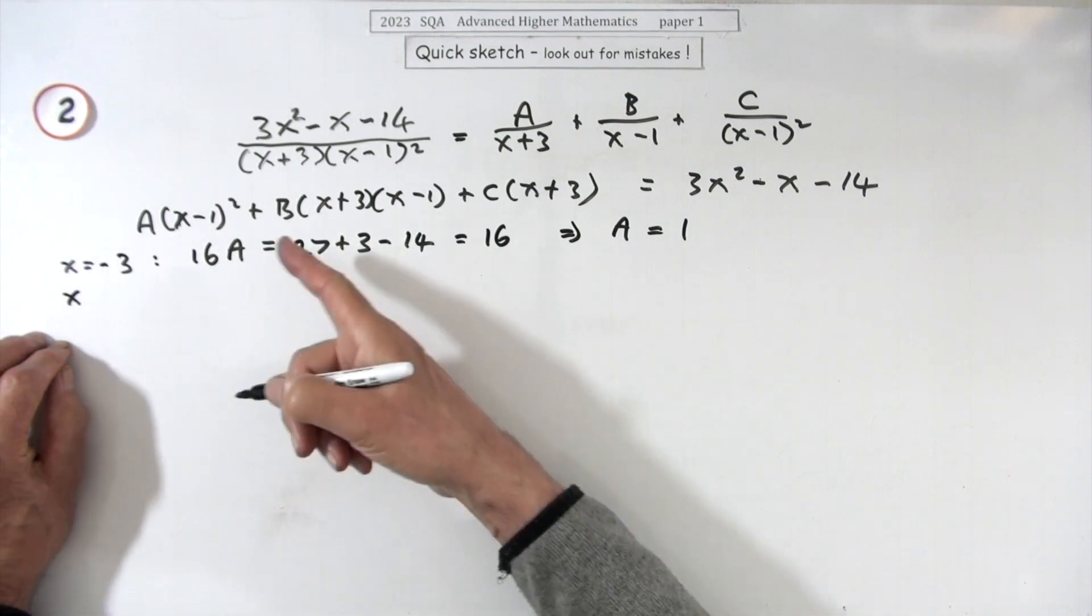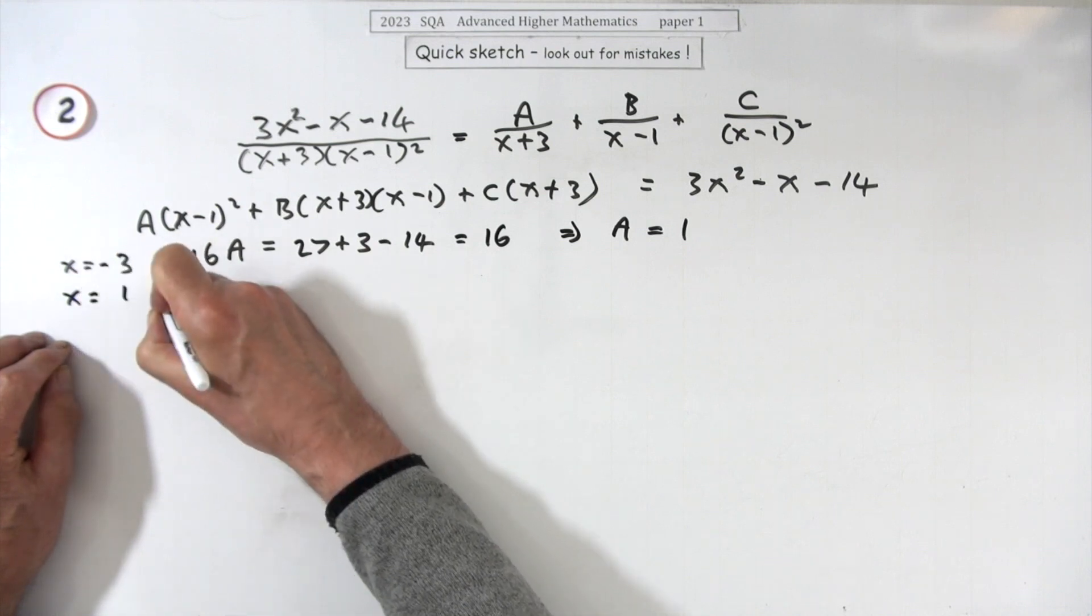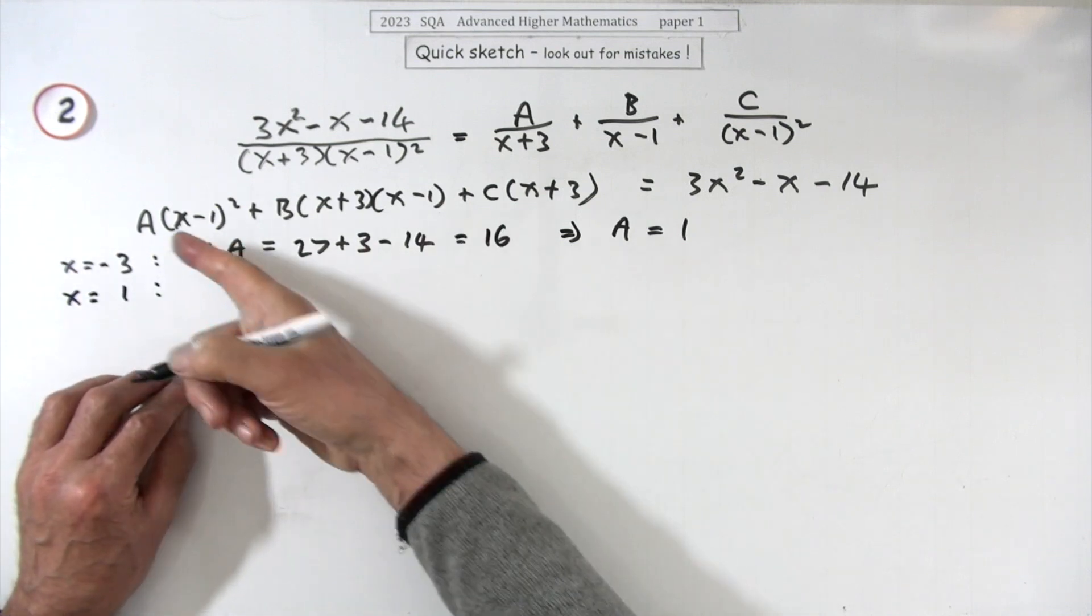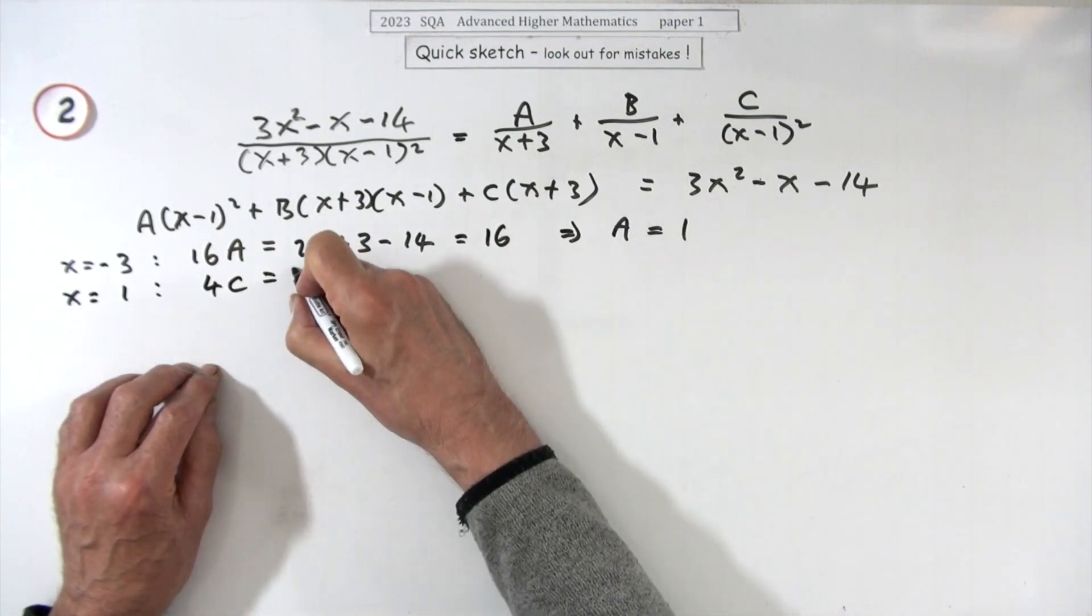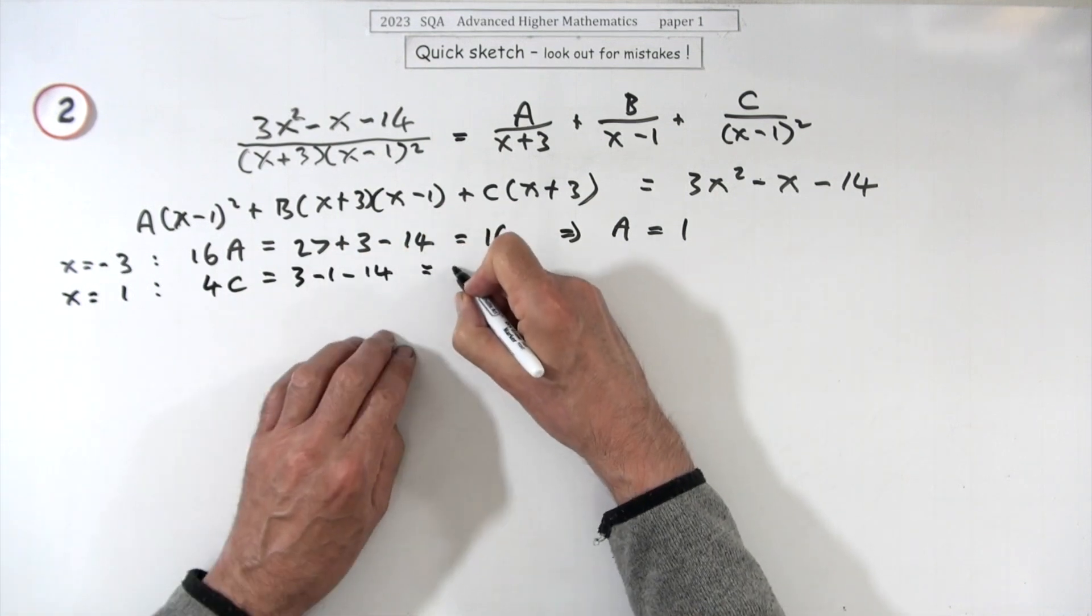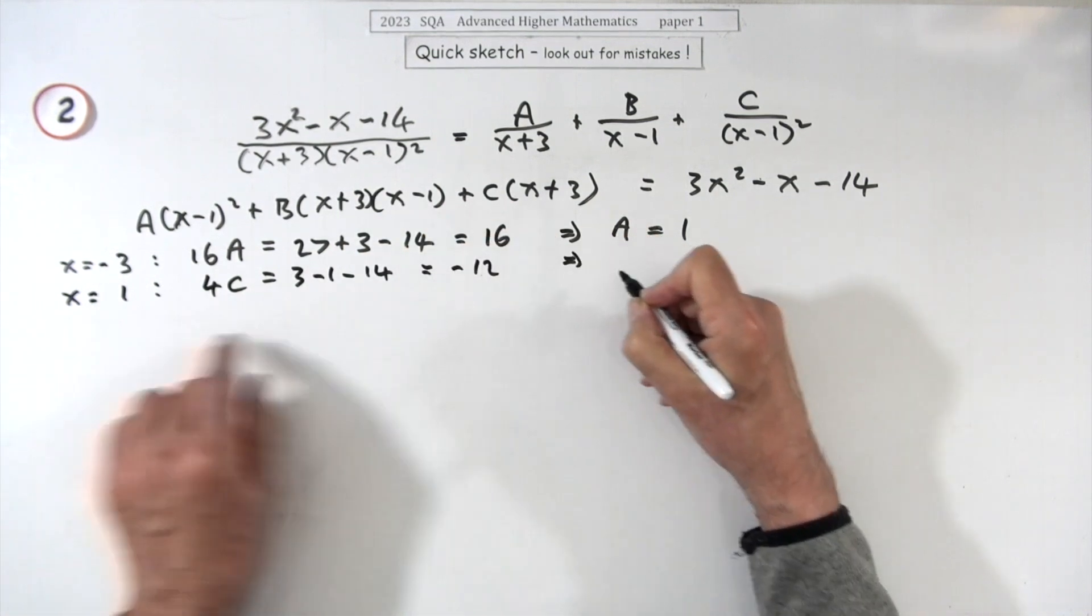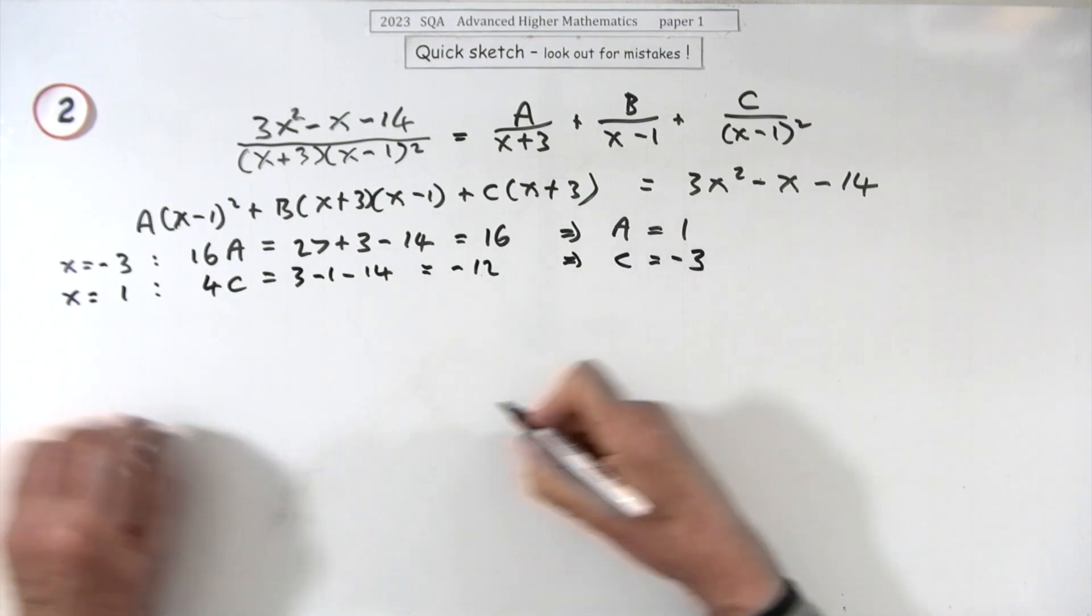B? Now we're not going to get B. C? Knock out there, make it equal to 1. So with that knocked out, that'll be 4 lots of C. Those numbers are easy with just ones, it's just going to be 3 minus 1 minus 14, which comes to negative 12. So that would be C equals negative 3.